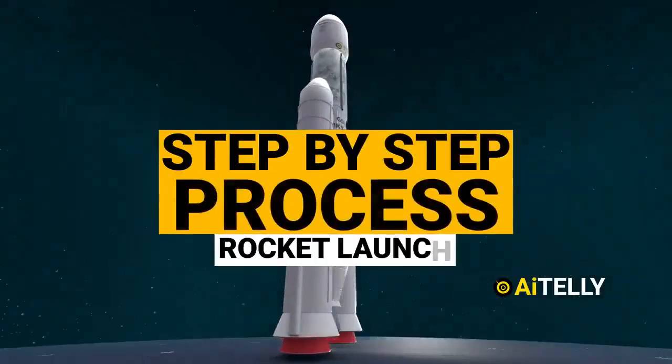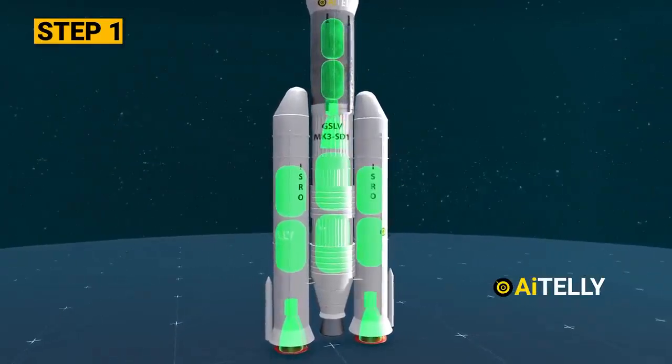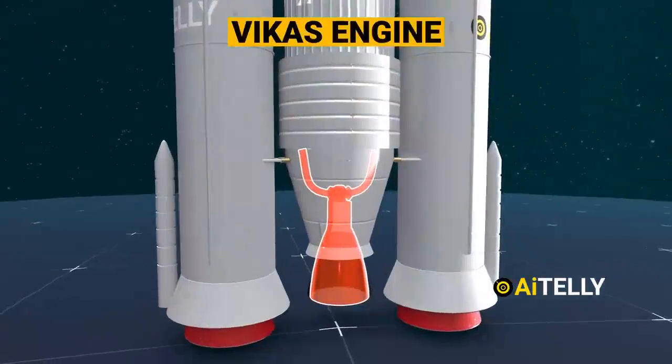Let's look at the basic steps-by-step process of launching this rocket. Step number one, the rocket's functioning revolves around a staged combustion cycle, employing liquid-fueled engines for both its core and supplementary boosters. Propelling the core stage is the Vicas engines.